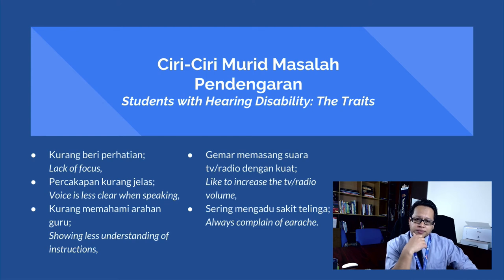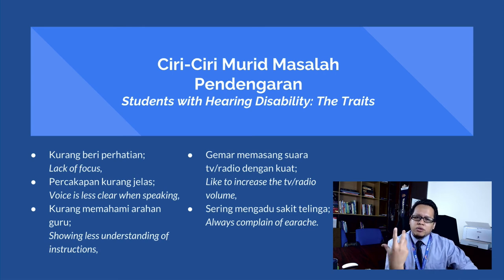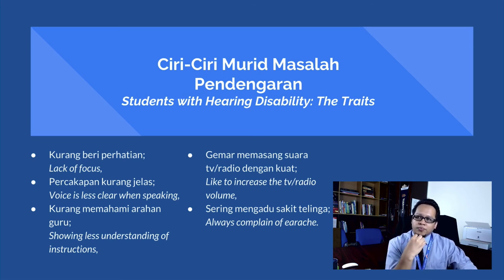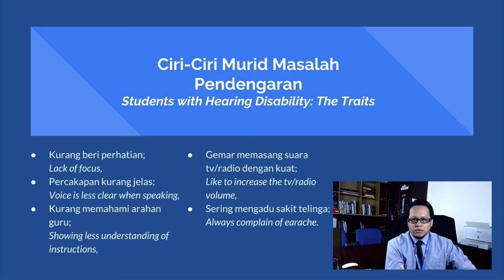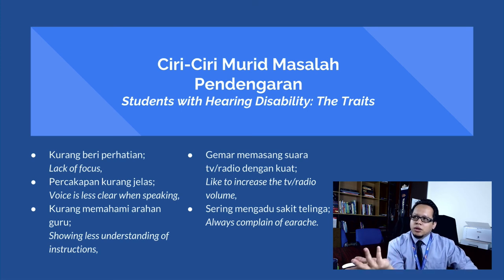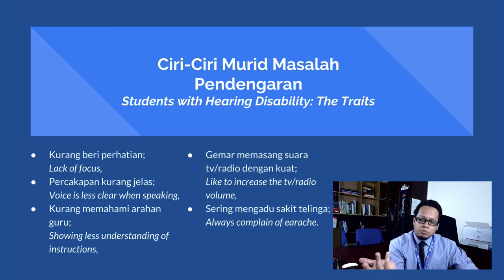Now let's look at the traits of students with hearing impairment. The first is lack of focus, which is expected because students can't focus when they can't hear what you're saying. The second is that their voice is less clear when speaking, since they can't even hear their own voice — you may find they speak louder than normal or with an unusual tone. They will also show less understanding of instructions, since they can't hear what the instruction is.